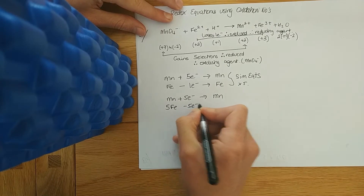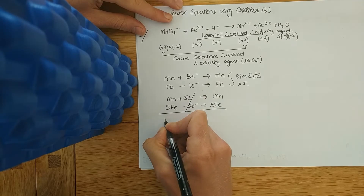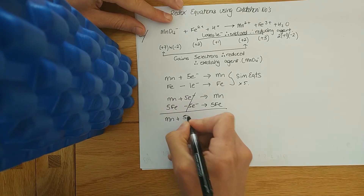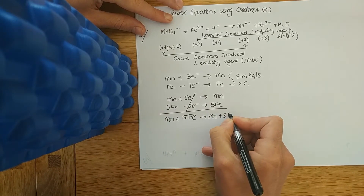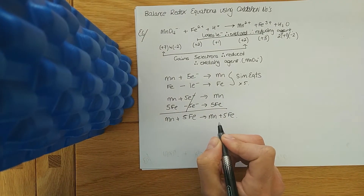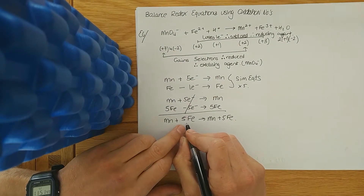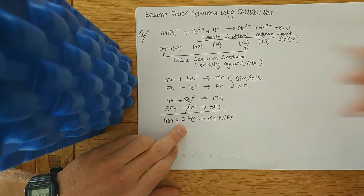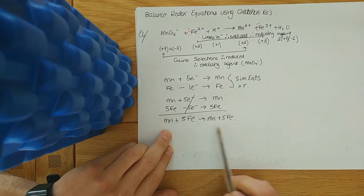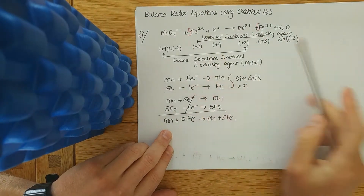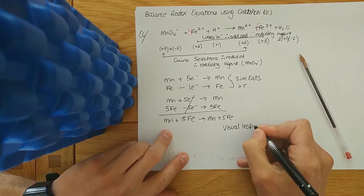To use simultaneous equations, you need the same number of electrons with different signs. Multiply the iron equation by five: 5Fe − 5e⁻ → 5Fe. That gives the same number of electrons with different signs. You're left with the combined equation, so throw a five in front of iron. Manganese stays the same.